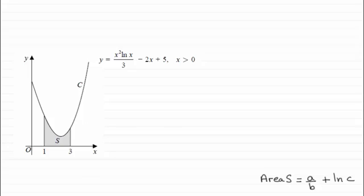Hi there. Now for this part of the question, we had to work out the exact value of this area S here and give it in the form A over B plus the natural log of C, where A, B, and C were integers to be found. So how do we do this?